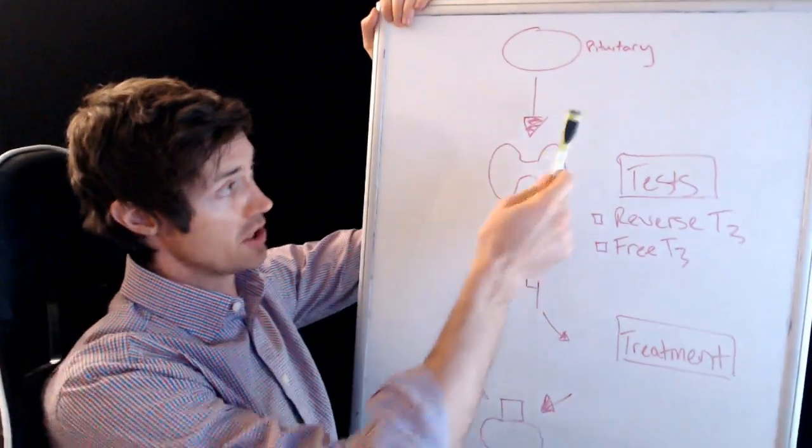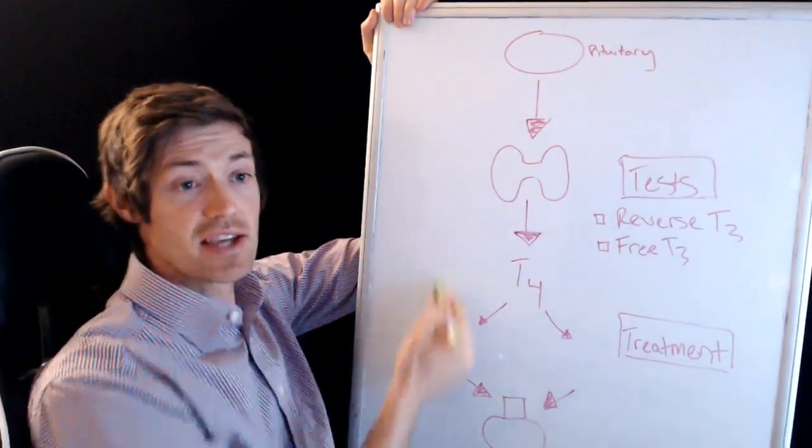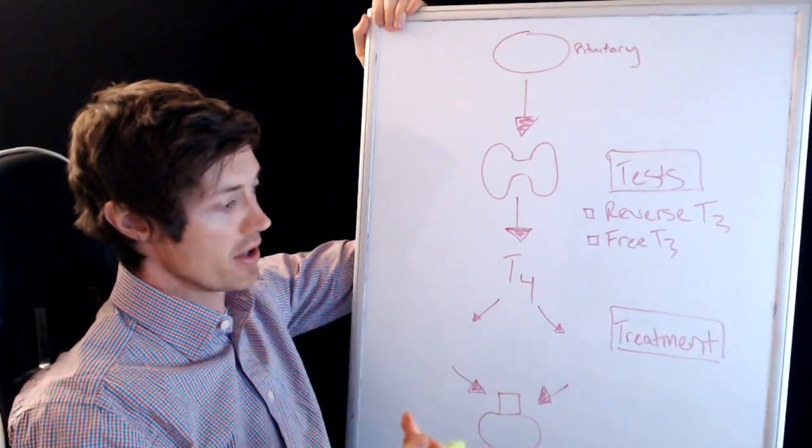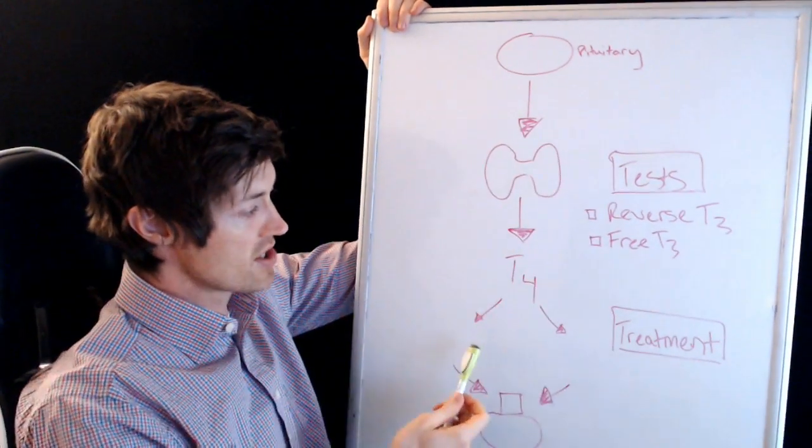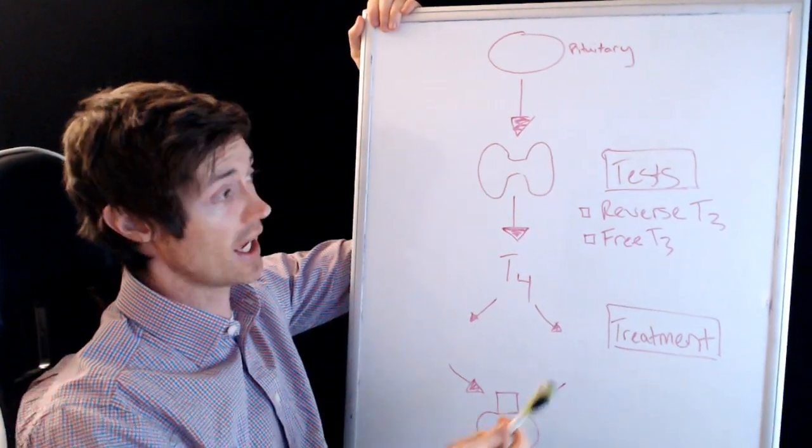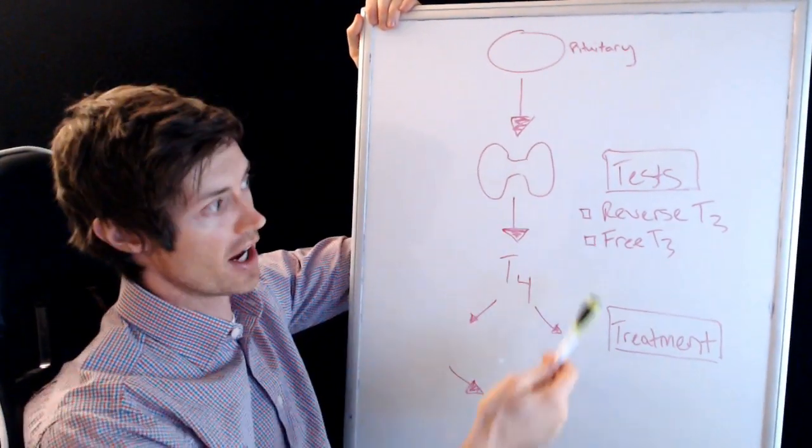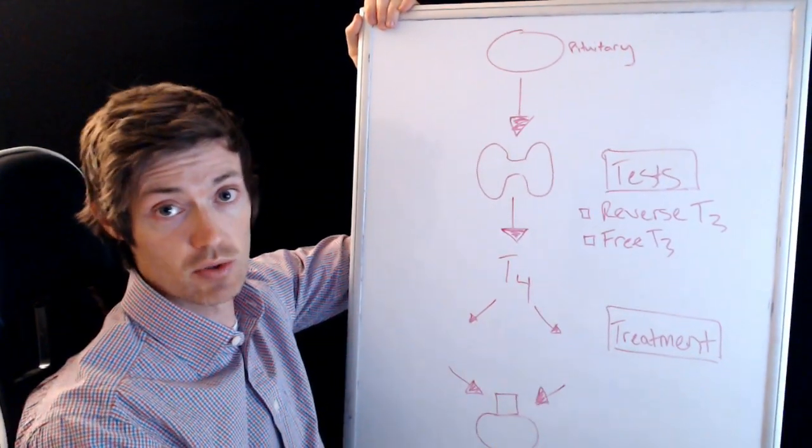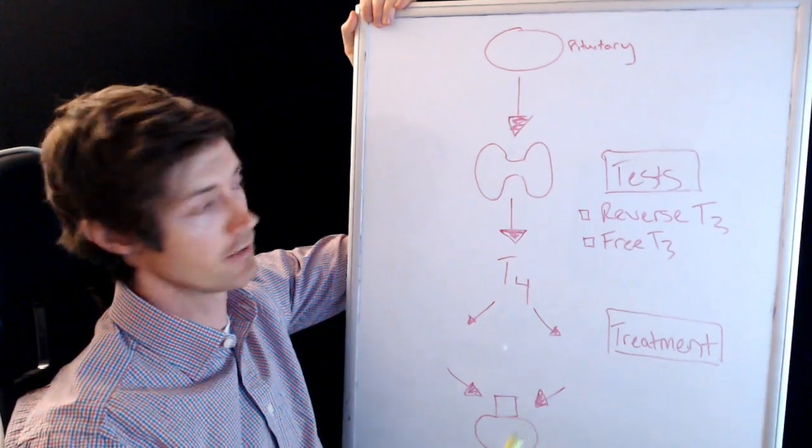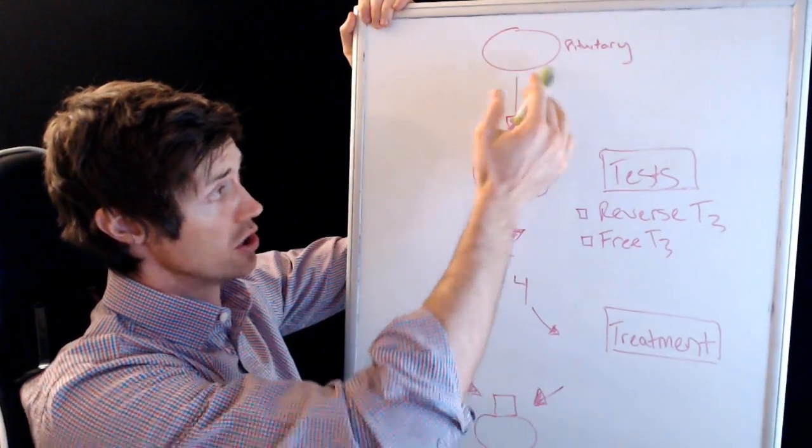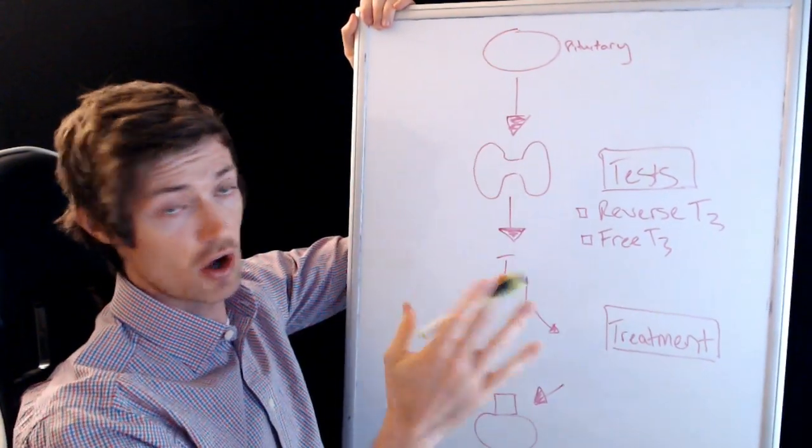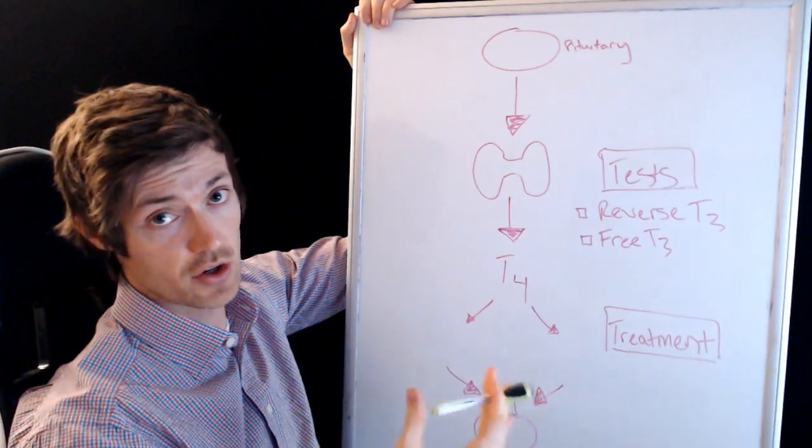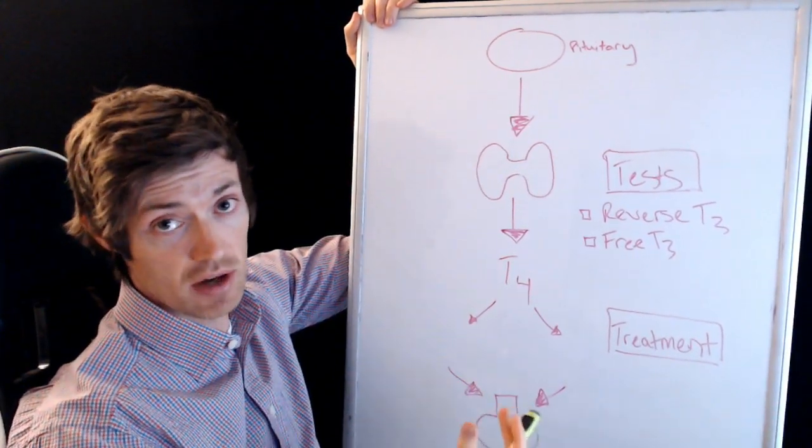And to do that, we're going to get the whiteboard because it's going to be helpful to look at this. So what I have here is just some basic physiology of how the thyroid is functioning. We're going to talk about why this occurs, how it can possibly lead to weight gain, and then I'm going to tell you what you can do about it.